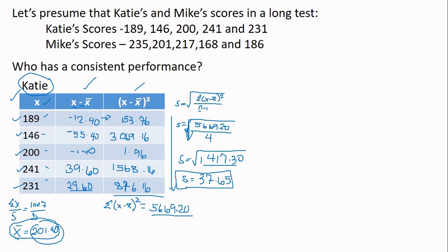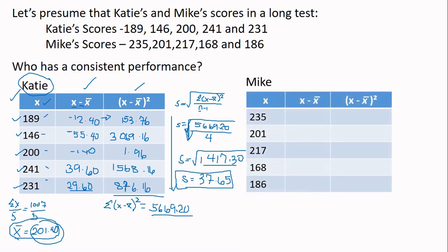Next class, we'll solve the standard deviation of Mike. We'll compare the two scores to see who has more consistent performance. So again, we'll solve for his mean. The total of all class is 1,007. The same as the first, divided by 5, same mean, which is 201.40.